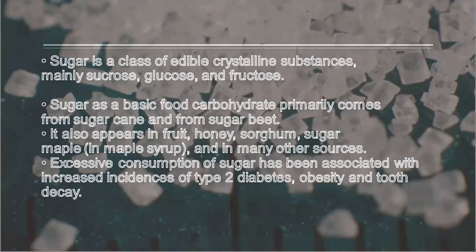Sugar is a class of edible crystalline substances, mainly sucrose, glucose, and fructose. It is a basic food carbohydrate, primarily coming from sugar cane or sugar beet. It also appears in fruit, honey, sorghum, maple syrup, and many other sources.